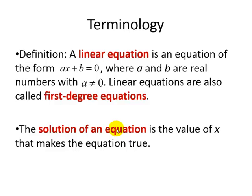First we need to introduce some terminology. A linear equation is an equation of the form ax plus b equals zero, where a and b are real numbers with a not equal to zero. That is, the variable or unknown is x.